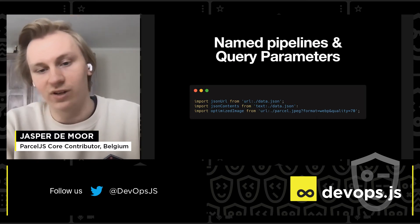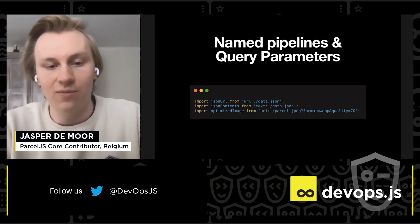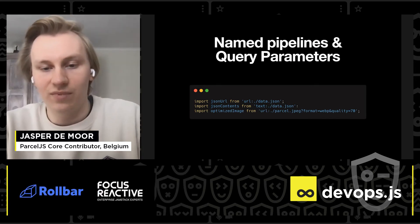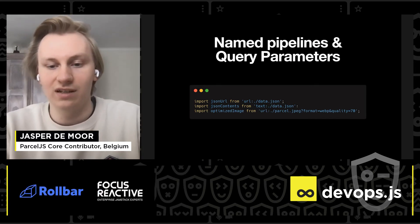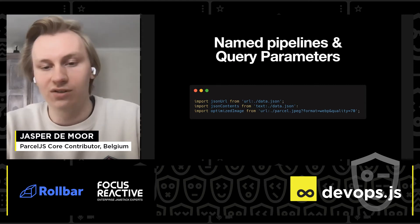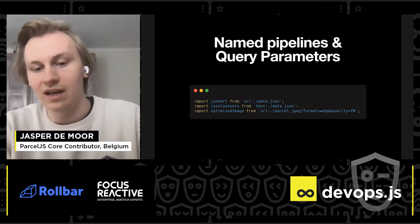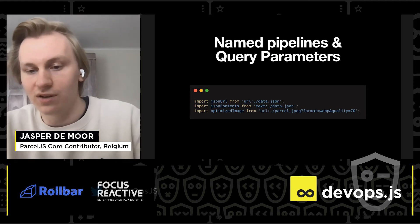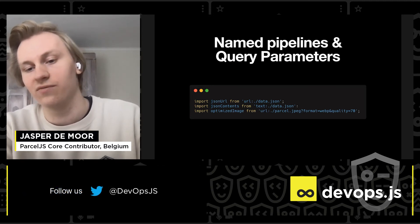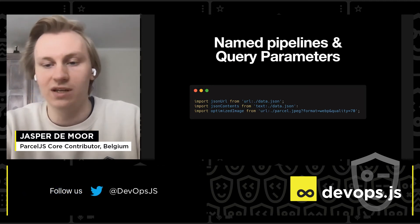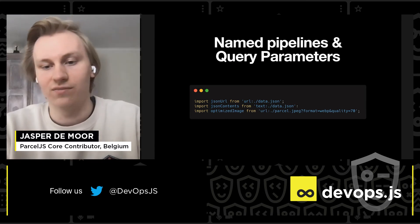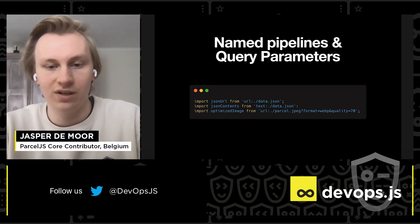We can also use query parameters — for example, for optimizing images. In this case, I've taken an example from our image optimizer, which uses a URL import. The file is parcel.jpg, a Parcel logo image, and then you have query parameters: the format is WebP and the quality is 70%, so that's a pretty heavily compressed image.